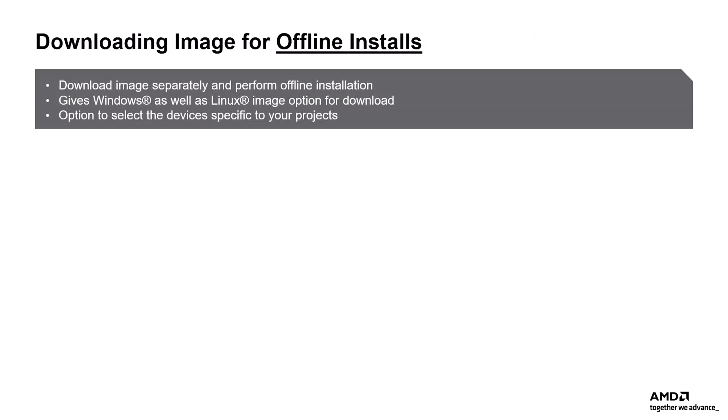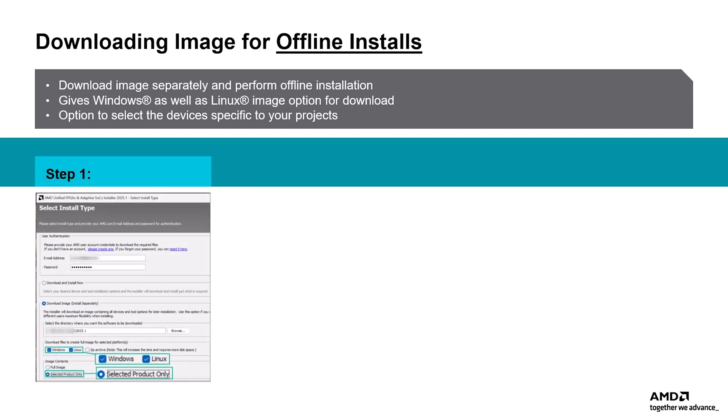The Unified Selective Device Installer also lets you select specific devices for offline installation by downloading an image from the Web Installer. This works like a single file download, but allows you to install the tools later without needing an internet connection. Here's how this process works: start by selecting Download Image, Install Separately from the Web Installer Setup.